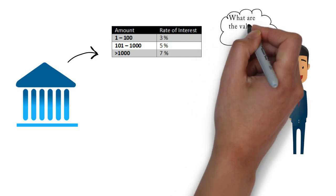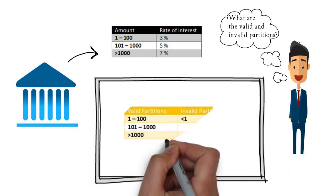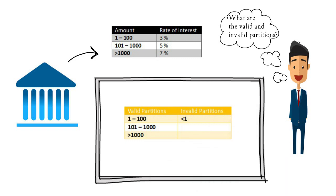This is the best scenario to use the equivalence partitioning technique. We find out the valid and invalid partitions and test only one condition from each partition to avoid testing all possible combinations. The valid partitions are: one to one hundred, one hundred and one to one thousand, and greater than one thousand. For example, for the partition one to one hundred, we test only one condition — if the customer puts ninety-nine dollars, the applicable rate should be three percent.